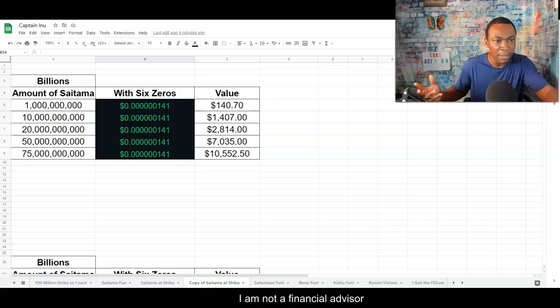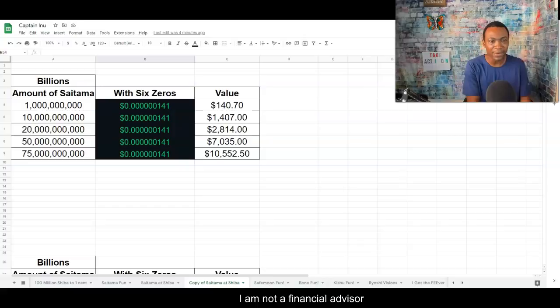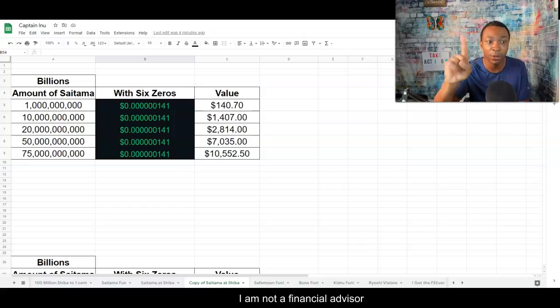So look at this. One billion Saitama, $140. That's not bad. Not bad at all. But the big one there is 75 billion Saitama, $10,000. That's just one zero off the price.